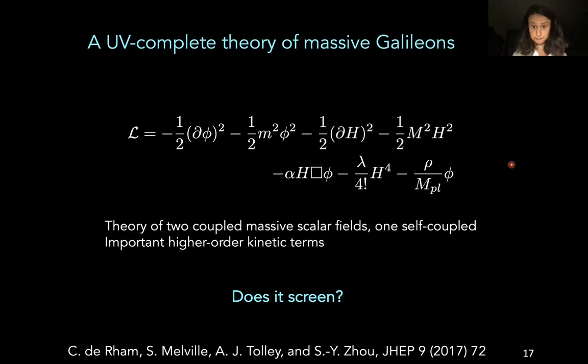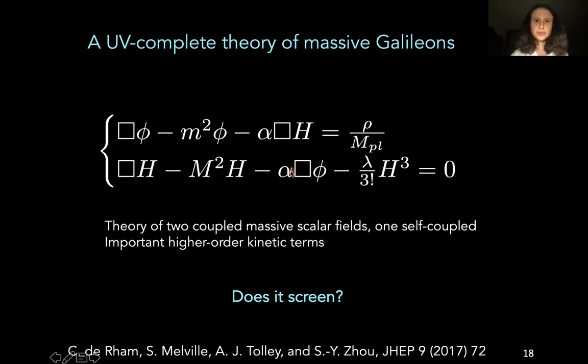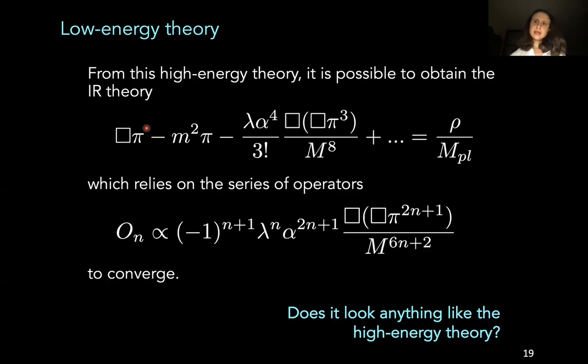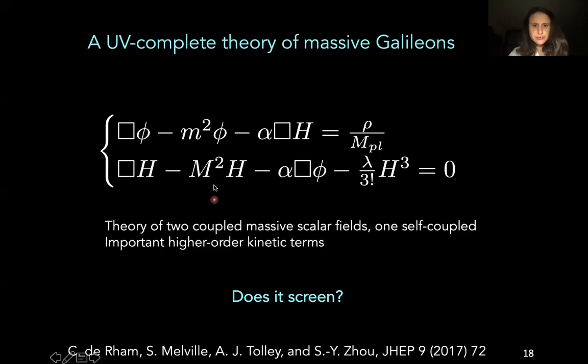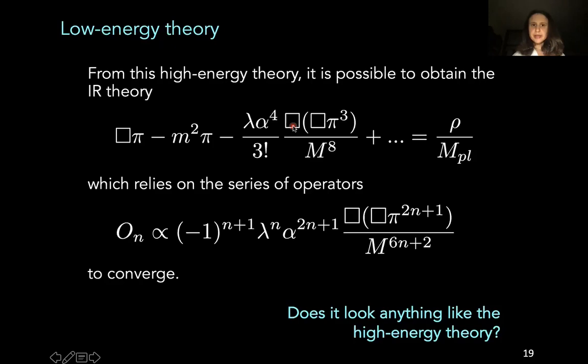And these are the equations of motion that you get from that theory. And in order to find out if it screens, we need to solve them. And as you can see, they're quite complicated. An equivalent way of saying this is, let's consider the low energy limit of this theory. So let's take this equation for the most massive scalar field, let's substitute it into this other equation, let's express the result in terms of powers of the mass of the heavy field, and let's truncate it at some order. So what happens to this low energy theory? Does it look the same as the high energy theory? And this is actually equivalent to saying this series of operators, does it converge?